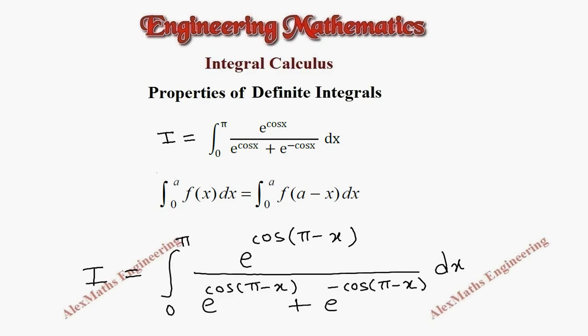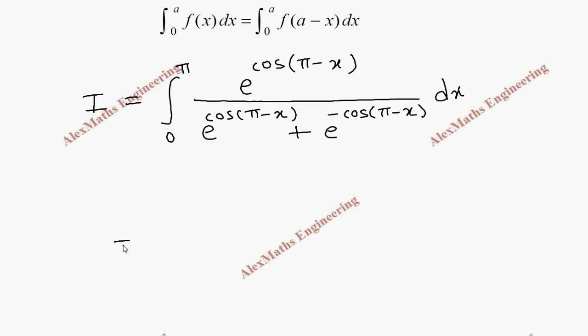Now cos pi minus x in the second quadrant, so look at minus cos x. So integral 0 to pi e power minus cos x divided by e power minus cos x plus e power, already there is a minus sign, now it will become cos x dx.